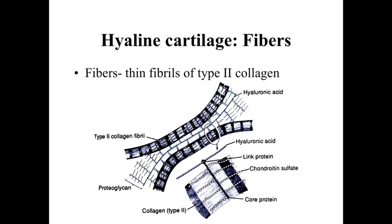The characteristics of hyaline cartilage include thin fibrils of type 2 collagen. Type 2 collagen is a finer collagen than the type 1 collagen found in more classic connective tissues like tendons, ligaments, and loose connective tissues. Hyaline cartilage has a specialized, thinner, finer type 2 collagen matrix within its extracellular matrix.